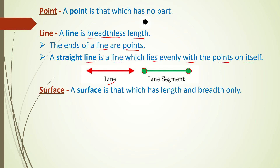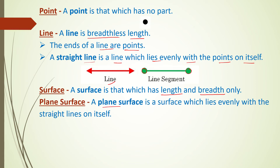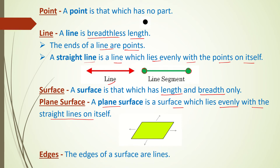A surface is that geometrical entity which has length and breadth only. A plane surface refers to a surface which lies evenly with the straight lines. The end lines of a surface are known as edges. This is an edge of the surface, this is also an edge, this is also an edge, and this is the last edge.